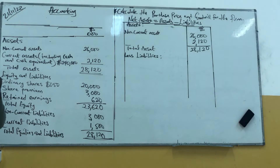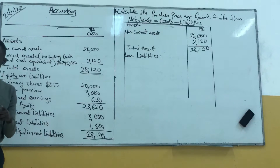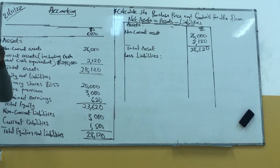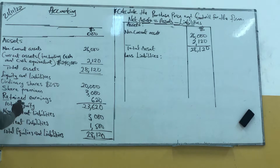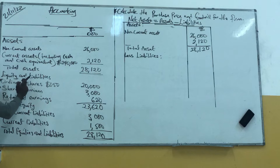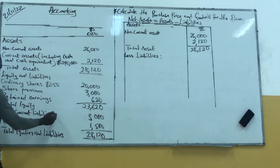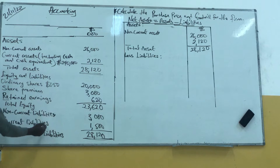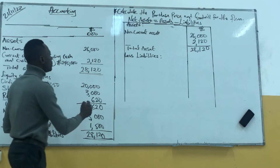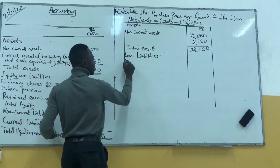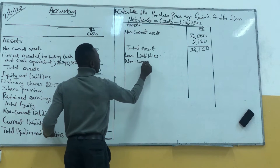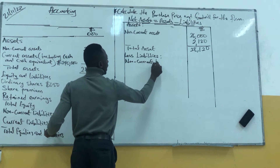From the liabilities and equity: equity is the money that we put into the business, from shareholders. So here we have equity, and we also have non-current liabilities. Our non-current liabilities — we write it as non-current liabilities.